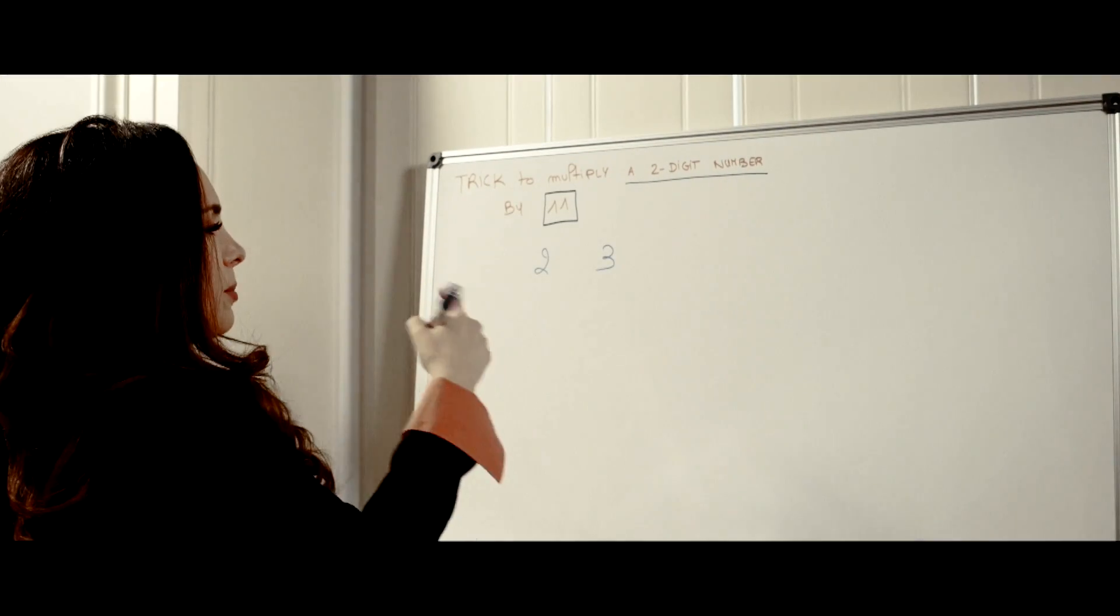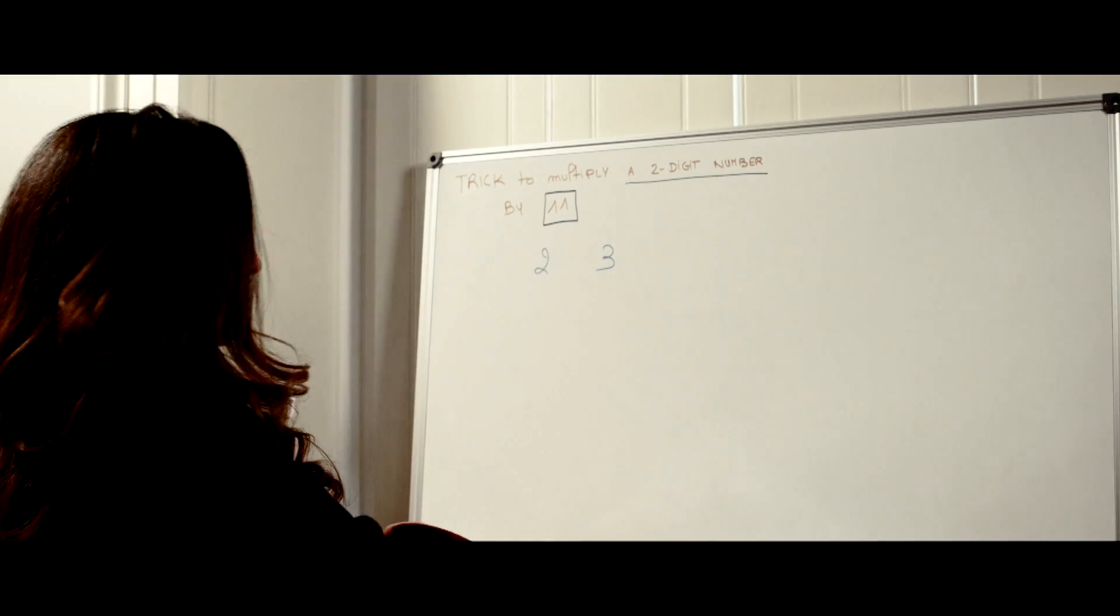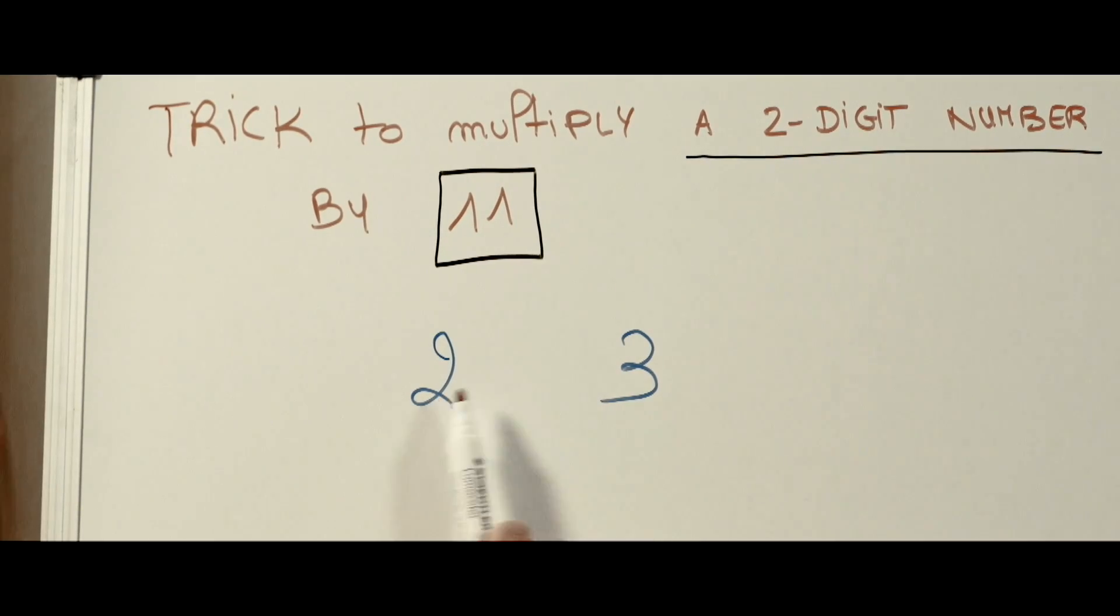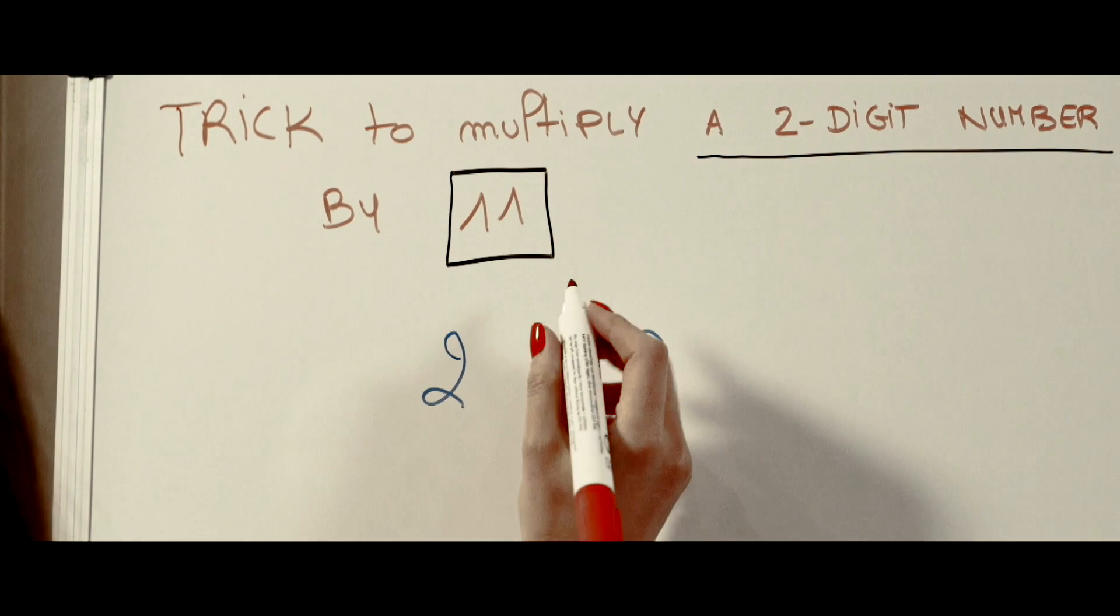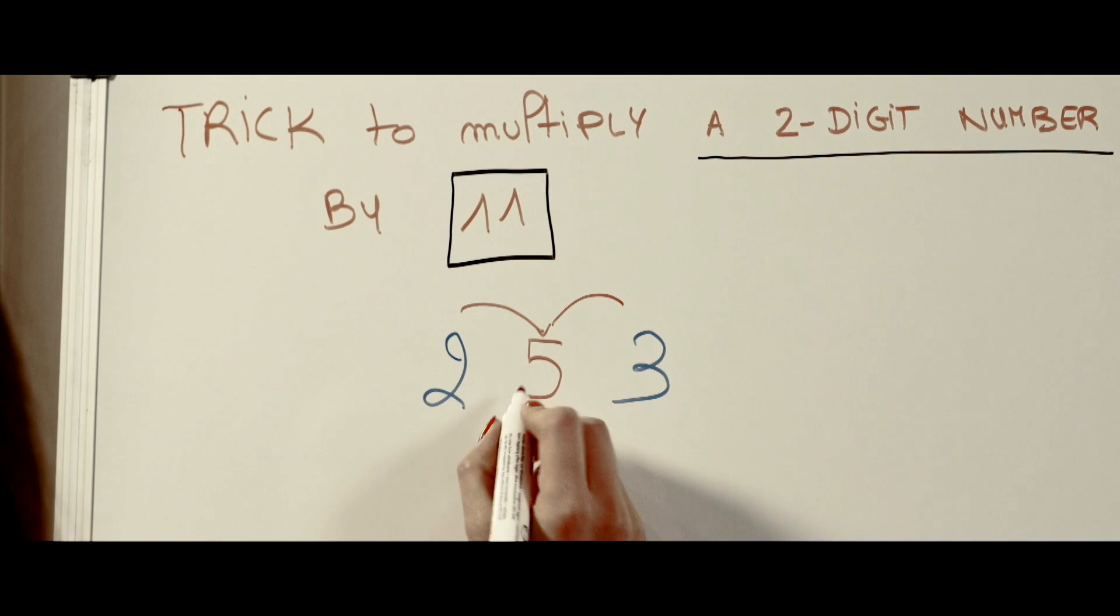So the way of multiplying 23 by 11 is quite easy because you just have to add these two numbers. So 2 plus 3 is 5. You place the addition of the two numbers in the middle and that's a 5.